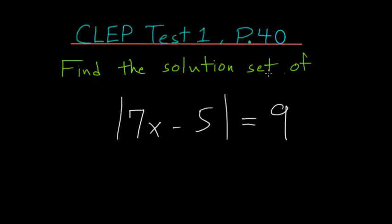Find the solution set of the absolute value of 7x minus 5 is equal to 9. And in absolute value equations, we have two separate parts that we have to consider.